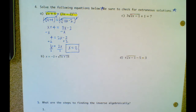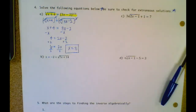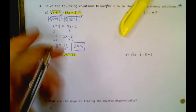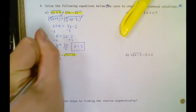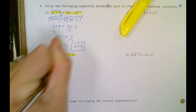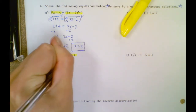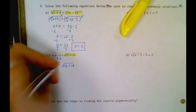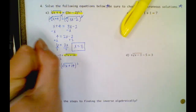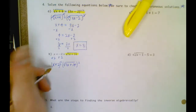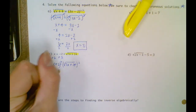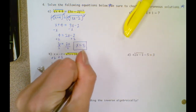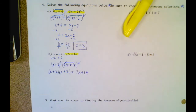Letter B. Here's my radical — it is not by itself. I have this minus 2 over here, so I'm going to add 2 to both sides. I get x plus 2 equals the square root of 7x plus 14.